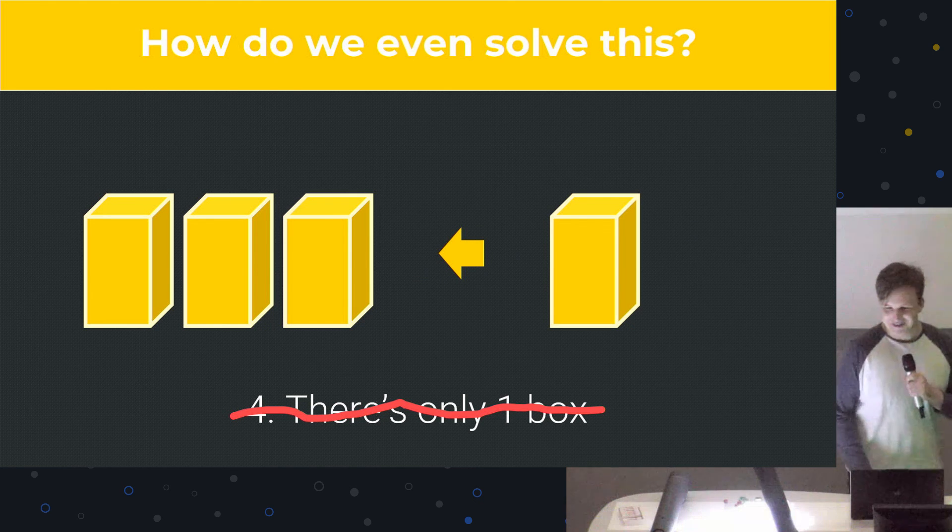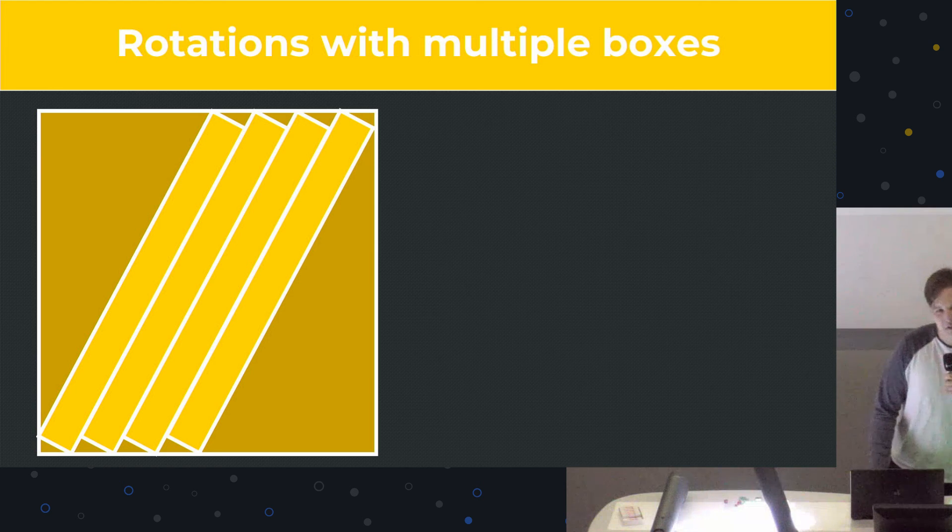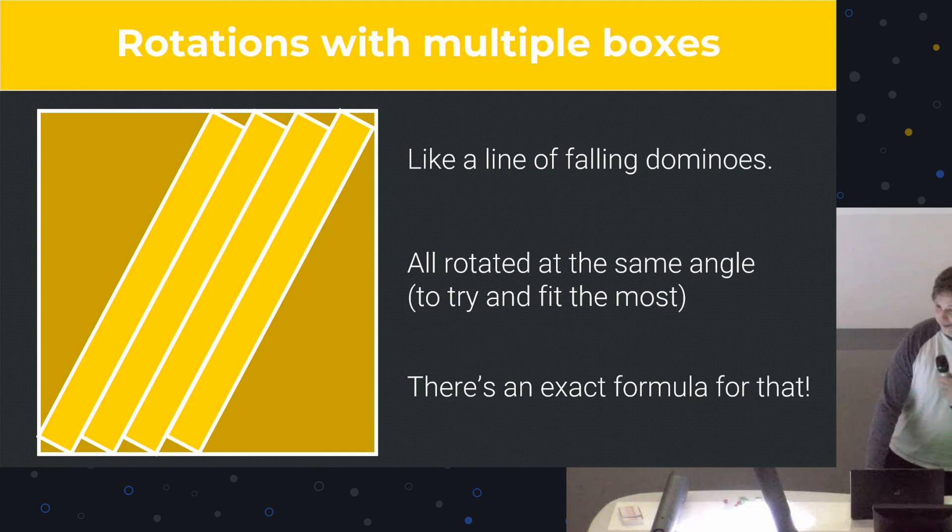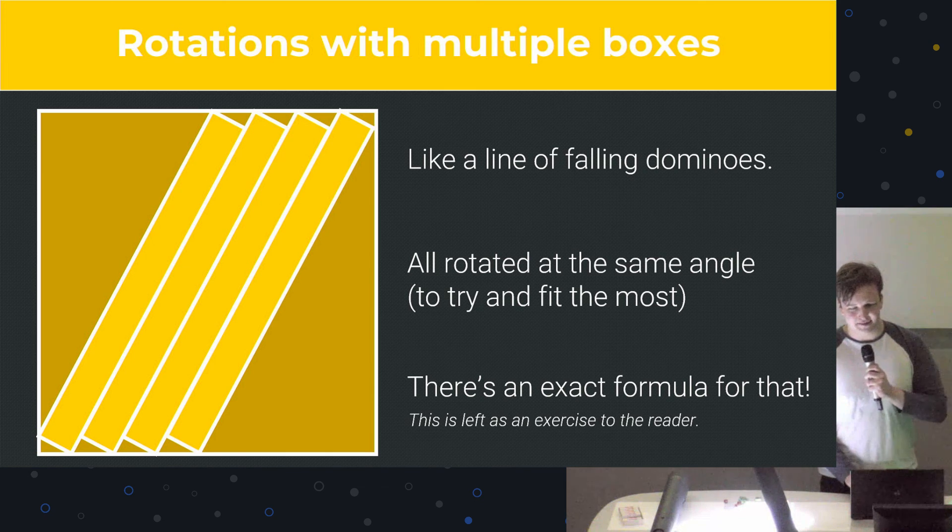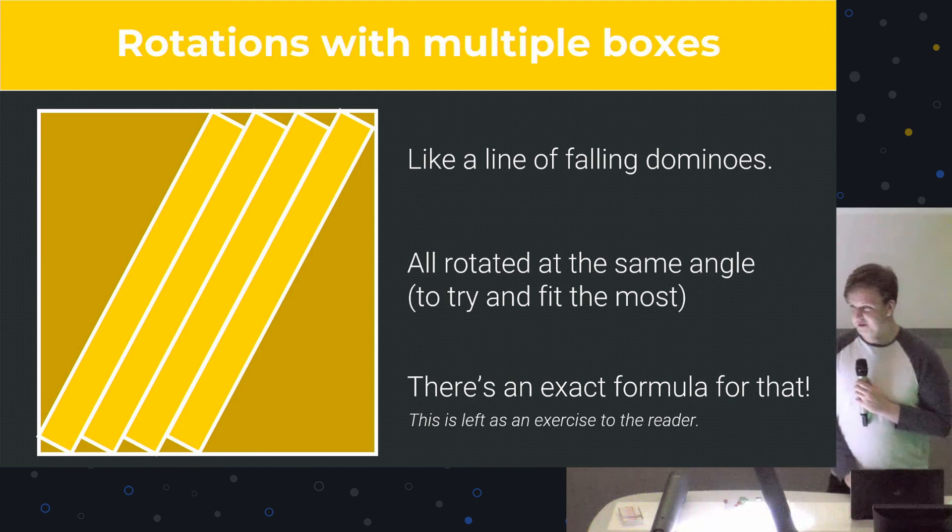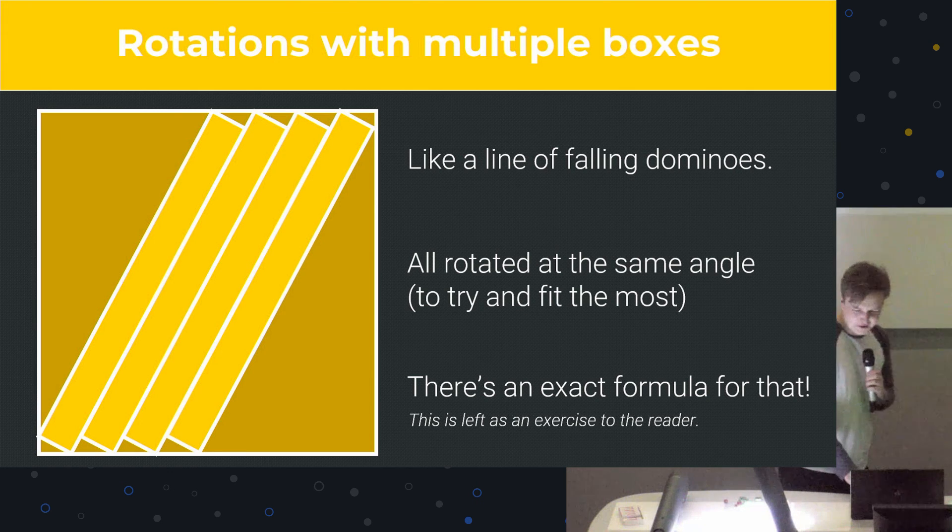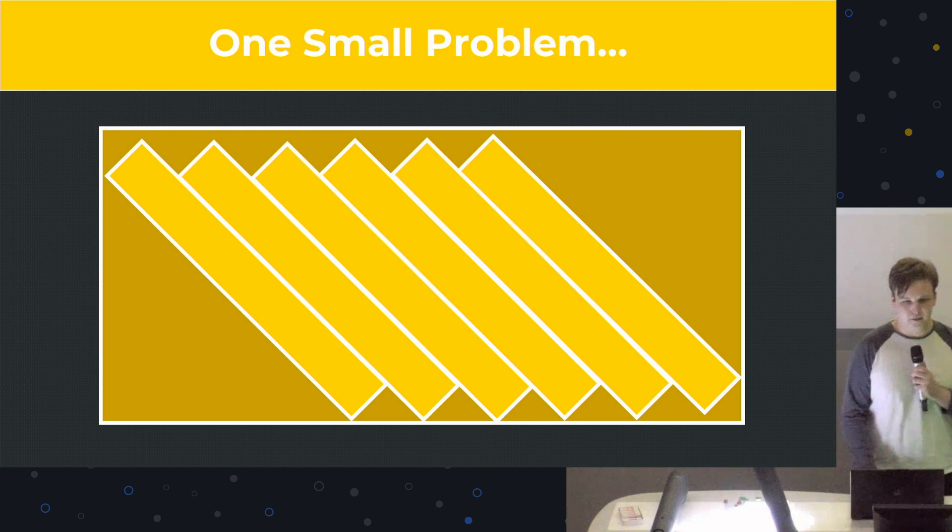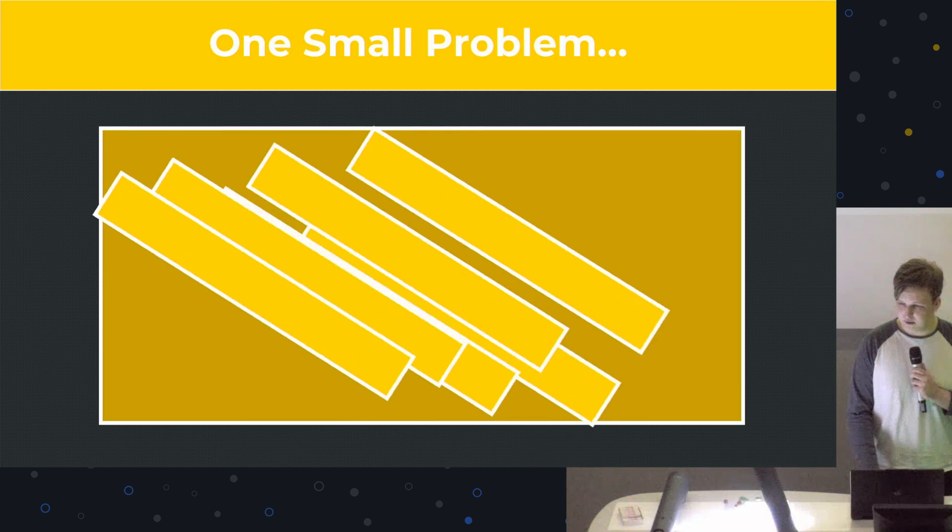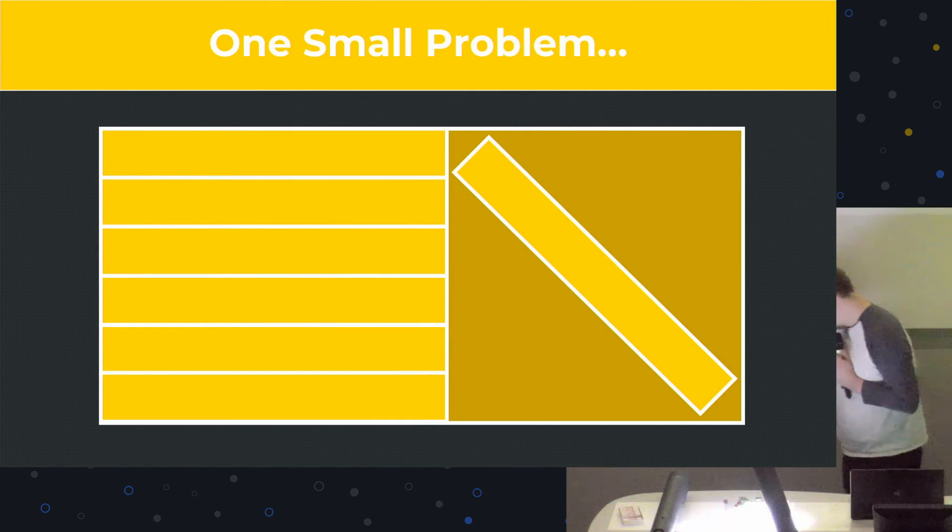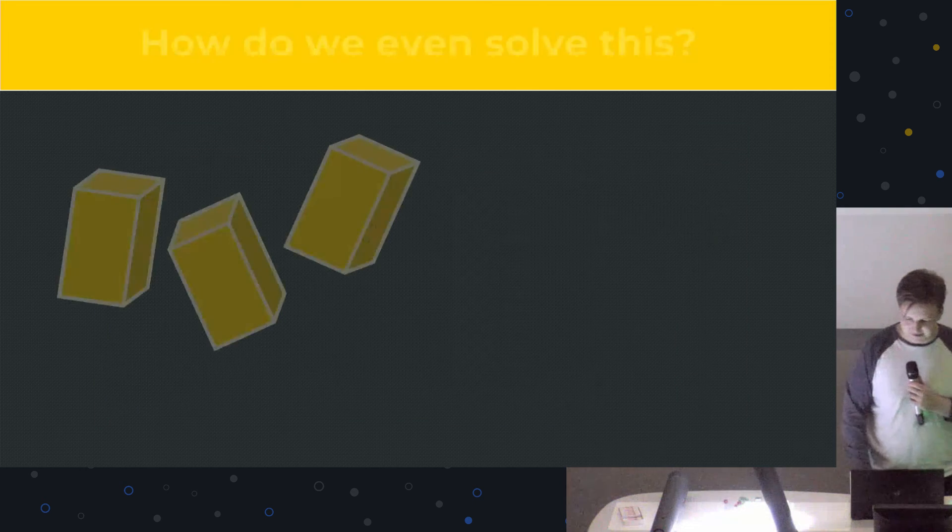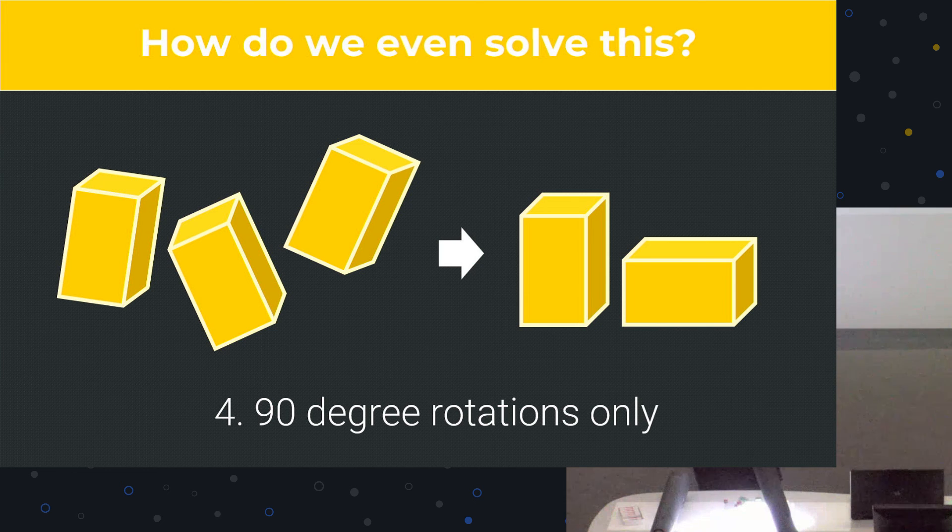Let's remove that assumption. So if we have rotations with multiple boxes, you can see it's almost like a line of falling dominoes. And they're all rotated at the same angle to try and fit the most that we can. And in fact, there is an exact formula for that. This is left as an exercise to the reader. You know, you can do it if you want. It's fine. For what it's worth, you can actually find this. Just don't spend too long on it. You've got your degree. One small problem, though. Again, if you take a look at this, and you can see where it's going, that's great. However, if I just rearrange them like that, I can also fit one here. So even when I do it diagonally, I'm not guaranteeing that all of them are diagonal. And now it's just horrible. How do we even get a formula for this? So I think we're going to make a really reasonable assumption and say that no rotations. No, no, no rotations. Just 90 degrees. It's fine. We'll just move on. Don't worry about it.